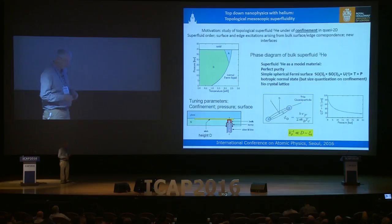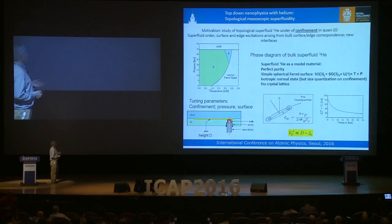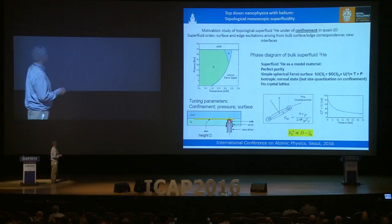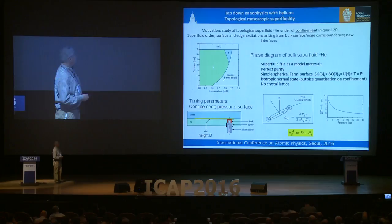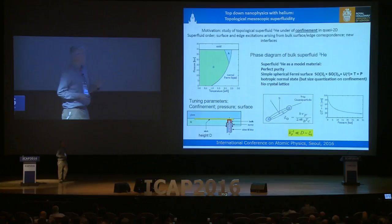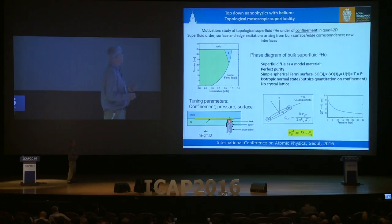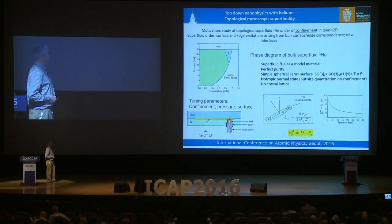In the top-down approach, we take a known material — superfluid helium-3. This is the phase diagram of superfluid helium-3, pressure as a function of temperature. Helium remains liquid down to absolute zero, and below a few millikelvin there are two superfluid phases: the B phase and the A phase. Superfluid helium-3 is a beautiful model material — it's completely pure, has a very simple spherical Fermi surface that preserves all symmetries, an isotropic normal state, and no crystal lattice.